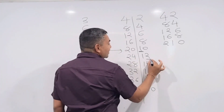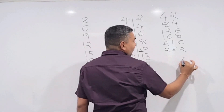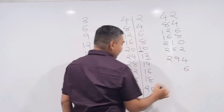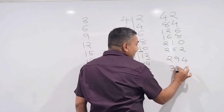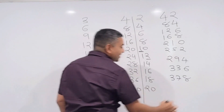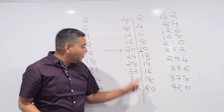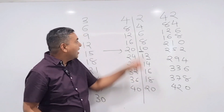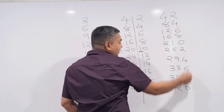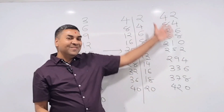Continuing: last digit 2 goes here, and 24+1=25. Next, last digit 4 here, 28+1=29. Last digit 6 here, 32+1=33. Last digit 8 here, 36+1=37. Finally, last digit 0 and 40+2=42. That's the complete table of 42! I wrote the 4 table, wrote the 2 table, connected them — keeping the last digit as-is and adding any carry to the left column. Table ready!